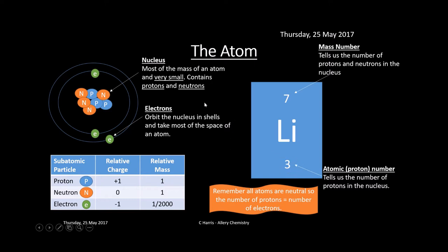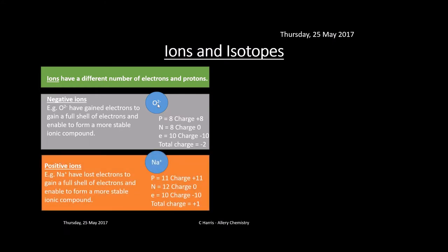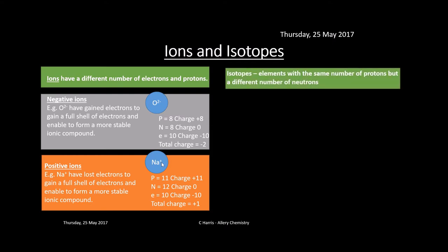Ions have a different number of electrons and protons. For example, oxygen has gained two electrons making it a negative ion (O²⁻): 8 protons (+8), 8 neutrons (0 charge), 10 electrons (−10), giving an overall charge of −2. Positive ions like sodium have 11 protons (+11), 12 neutrons (0), and 10 electrons (−10), giving an overall charge of +1. Positive ions effectively lose an electron to form the positive ion — sodium (Na⁺) is an example.